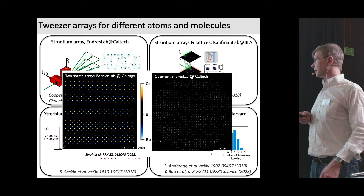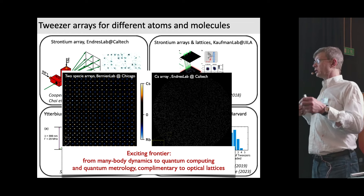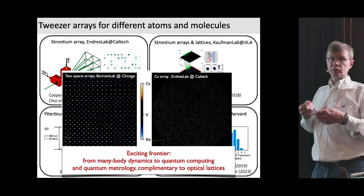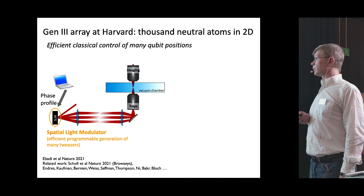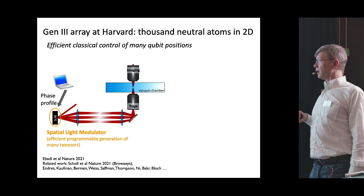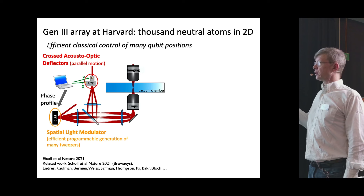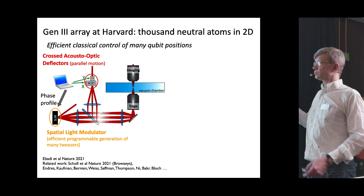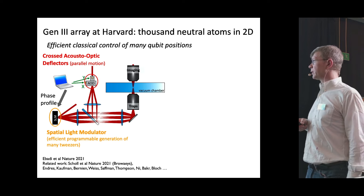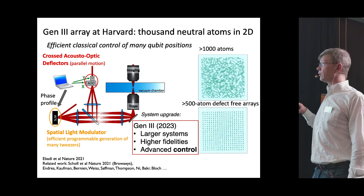This exciting frontier bridges many topics in quantum science, from many-body dynamics to quantum computing to metrology, and is complementary to optical lattices. In our lab, for the past year or so, we have been operating our third-generation atom array system using spatial light modulators for static traps and crossed acousto-optic deflectors for atom movement. This third generation features larger systems, high fidelity, and much more advanced control — we can trap over a thousand atoms and make defect-free arrays of over 500 atoms.